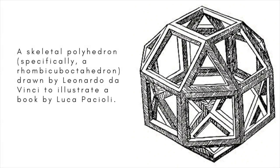A polyhedron is a three-dimensional object bounded on all sides by polygons, and whose edges are shared by exactly two polygons. The word polygon comes from the Greek poly for many, and hedron meaning base or face.